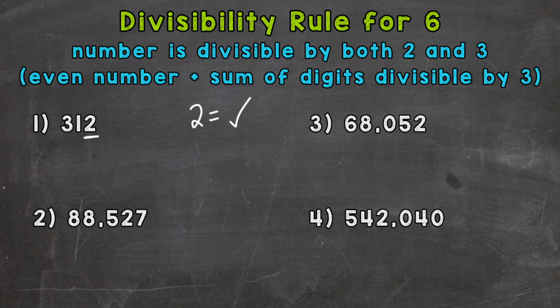That means that that number is even, therefore divisible by 2. If a number ends in 0, 2, 4, 6, or 8, it's an even number.